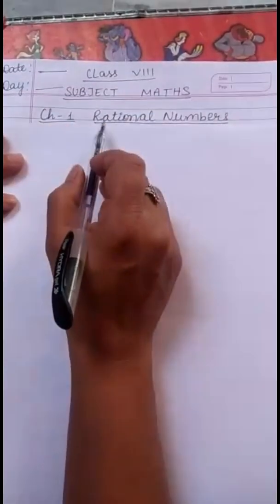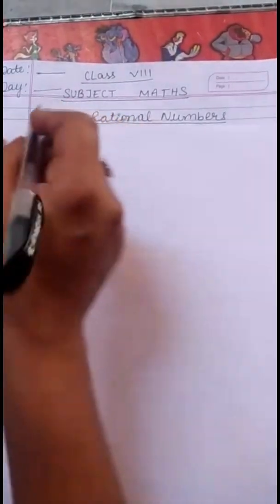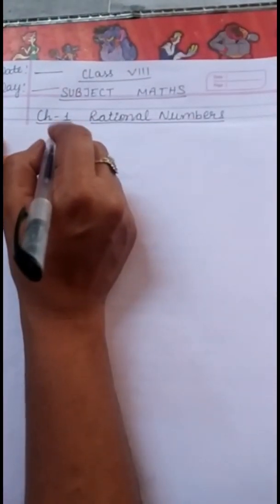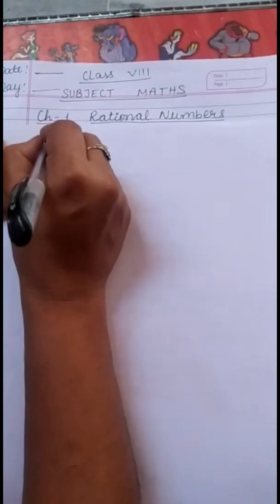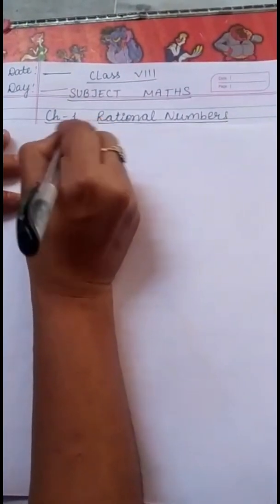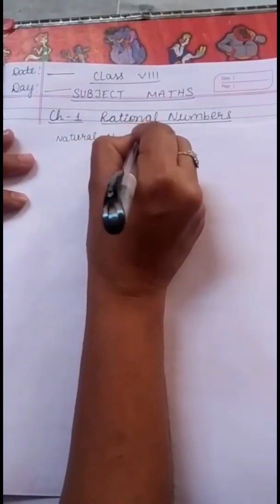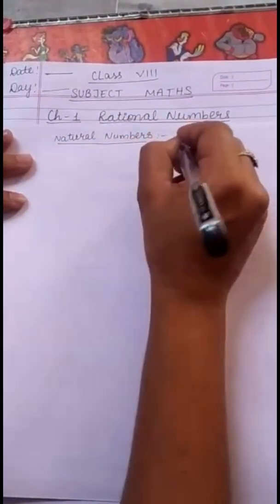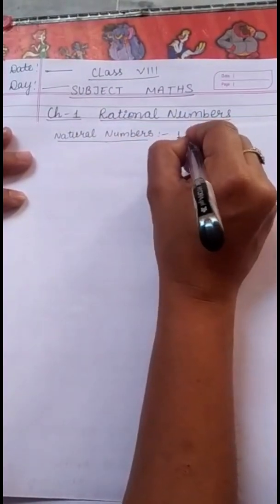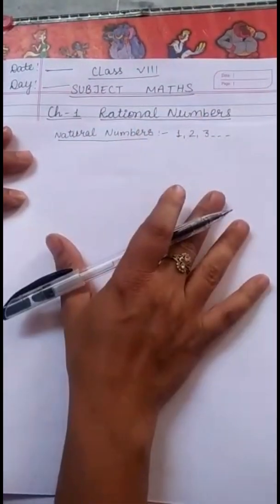Before starting the topic of rational numbers, let us recapitulate the different types of numbers which we have discussed in the previous classes. Natural Numbers are also called Counting Numbers. They start from 1, 2, 3, and so on. All are Natural Numbers.